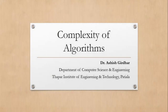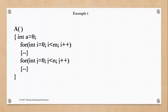Hello students. In the last video we discussed how to calculate the complexity of an algorithm. In this video we will discuss some more examples. The first example has an initialization statement, so its time complexity is O(1) because it will take a constant amount of time.